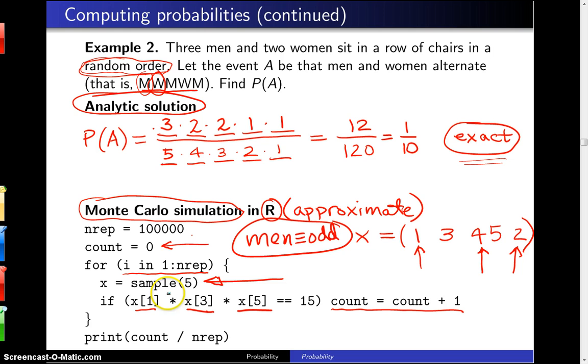And then when we've made it through 100,000 replications, we print out how many times we got them in the odd positions there, in the first, third, and fifth positions, divided by the 100,000.